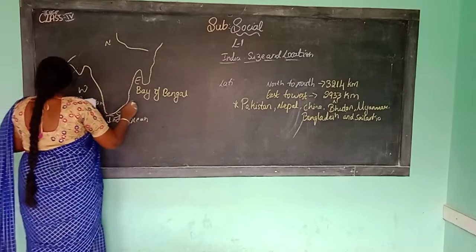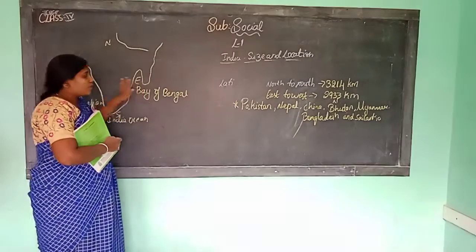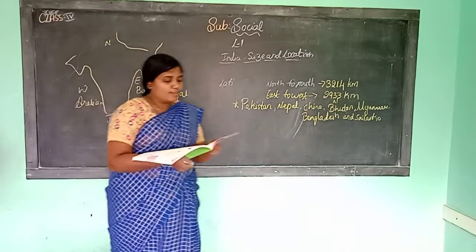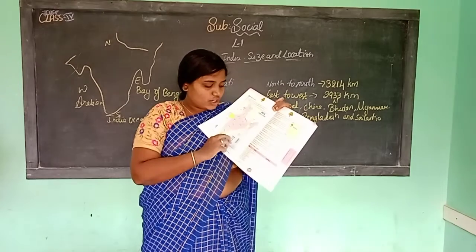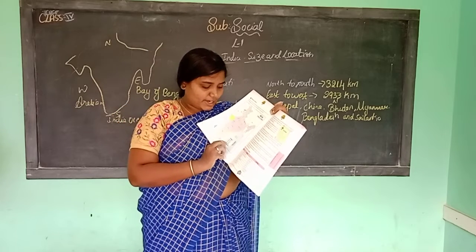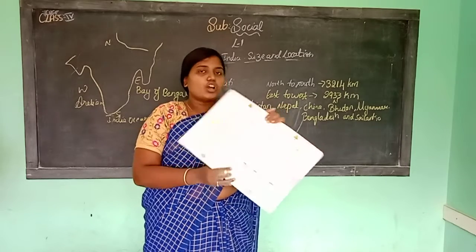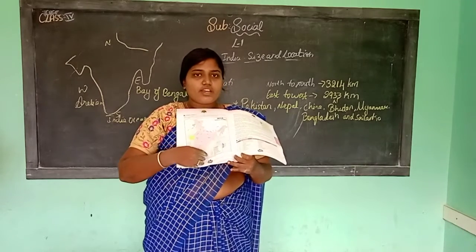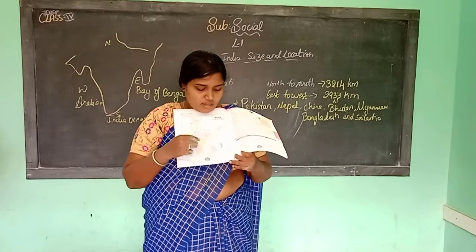India is surrounded by 3 water bodies. On the west side we have the Arabian Sea, on the east side we have the Bay of Bengal, and the Indian Ocean in the south. In the map, these are indicated with different colors. Light yellow color means the Indian Desert, pink color means Northern Plains, dark yellow means Coastal Plains.